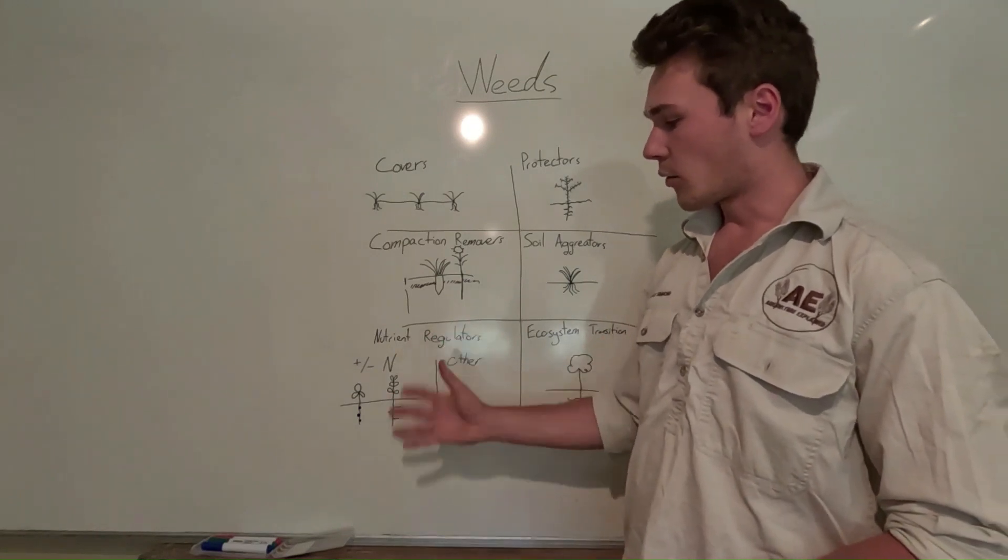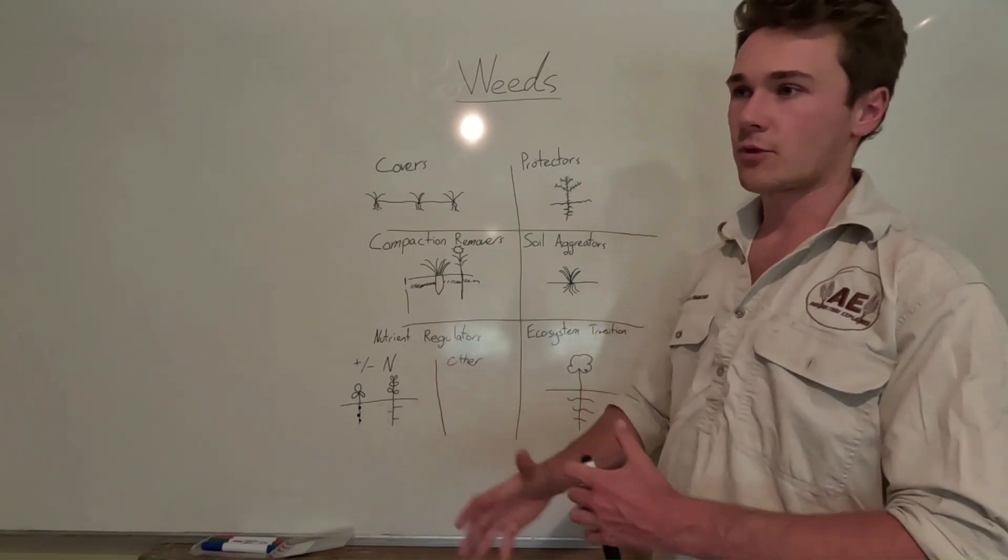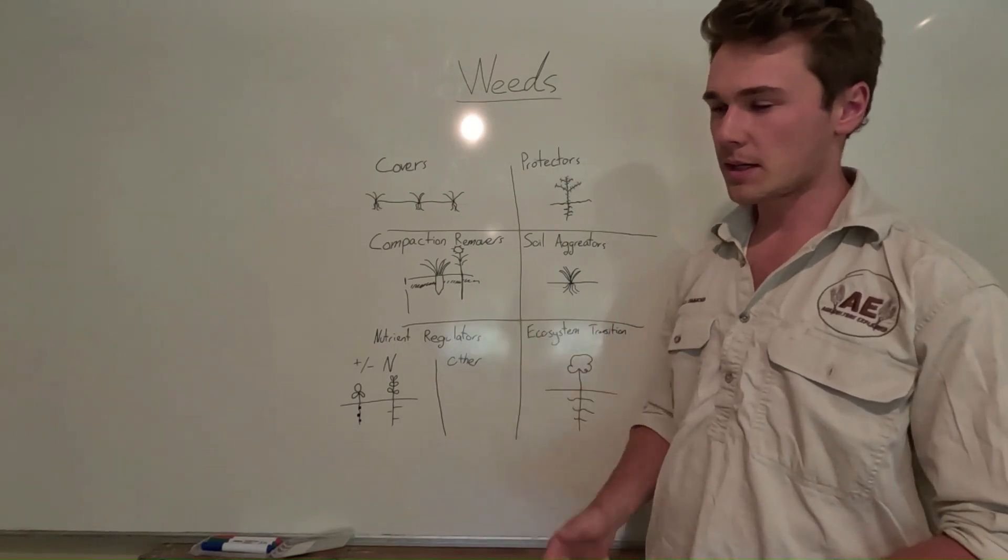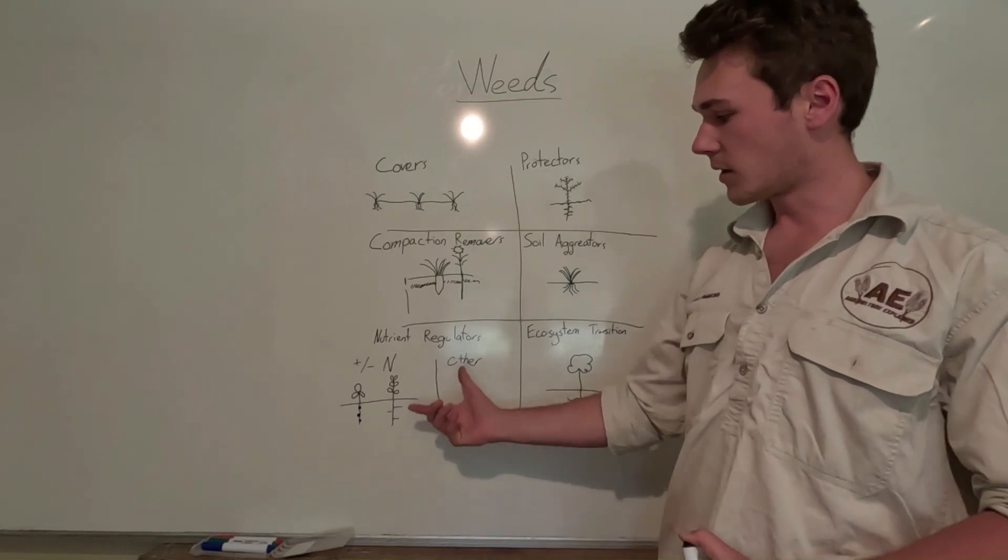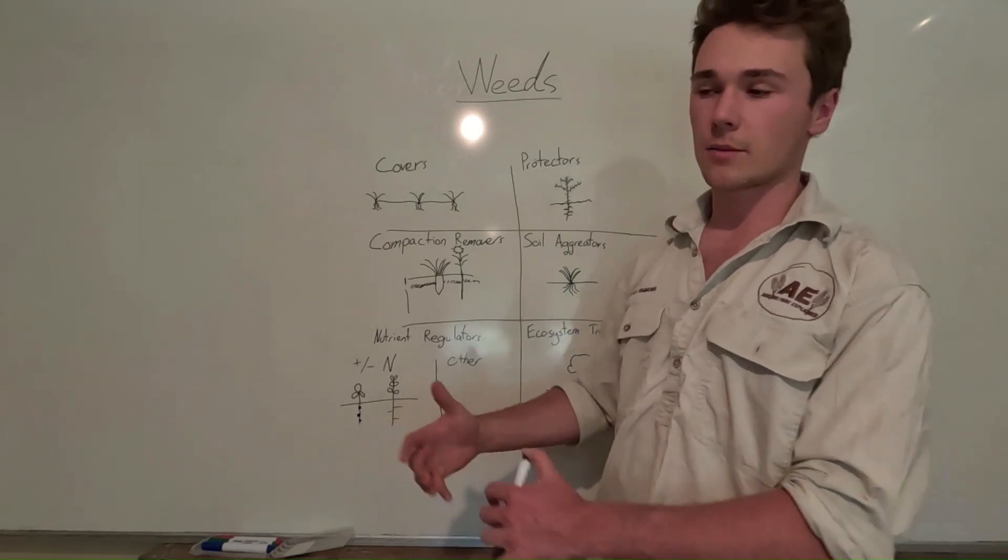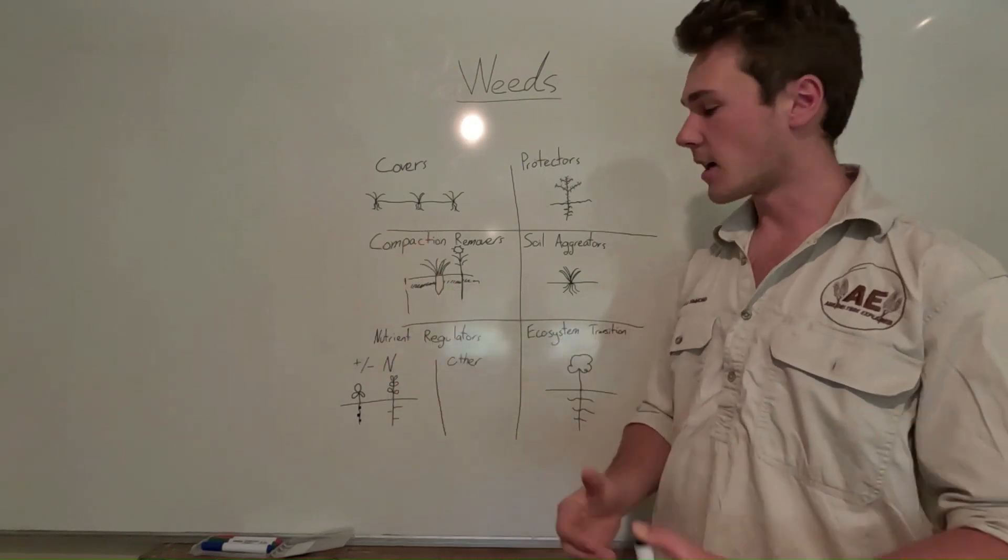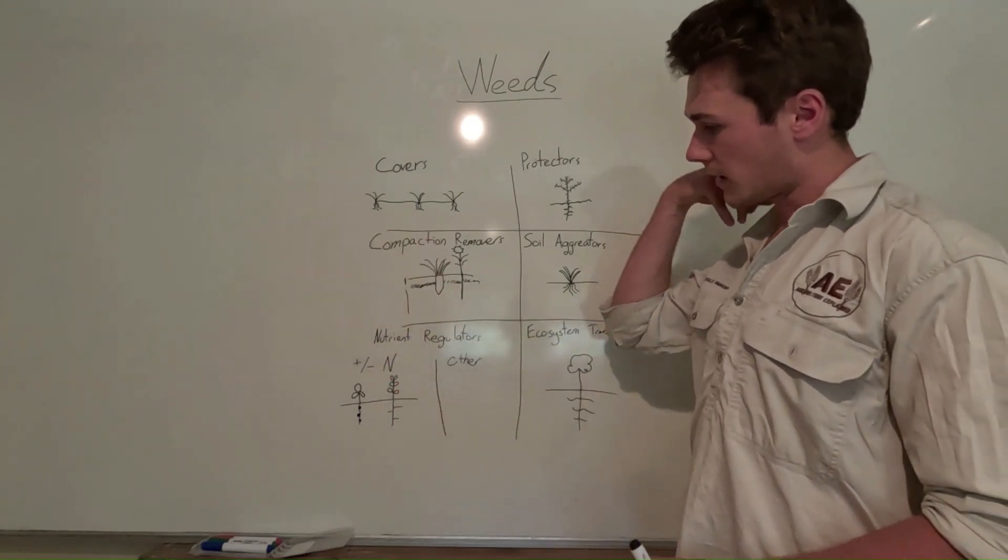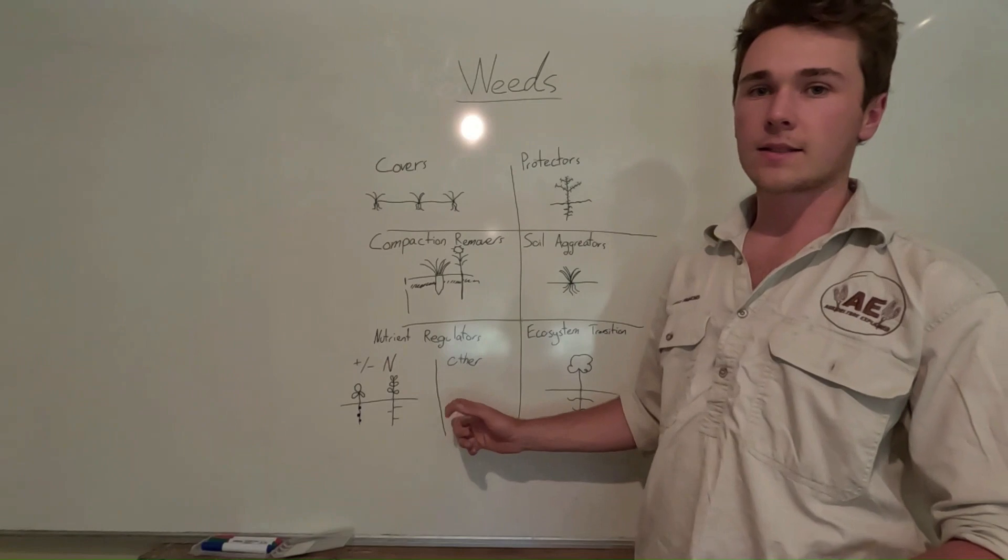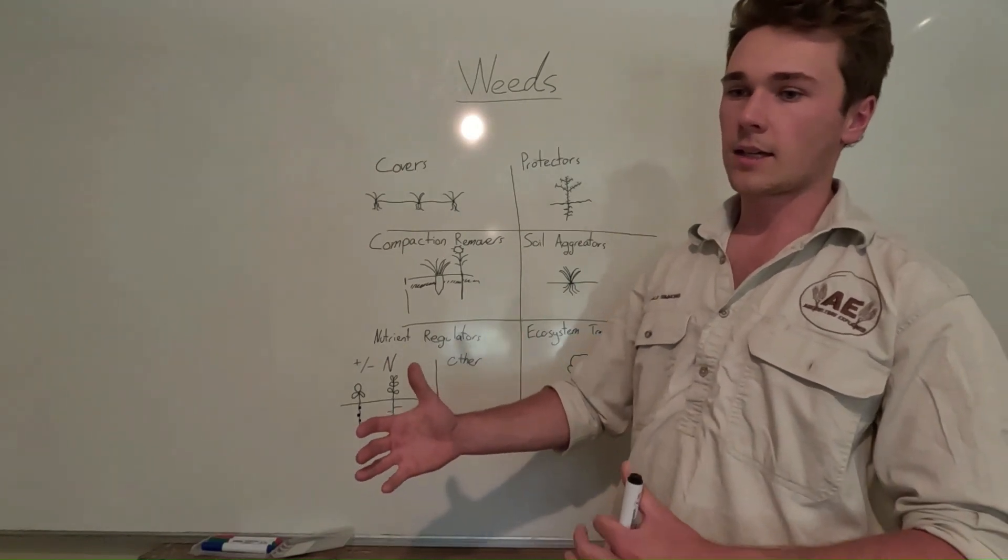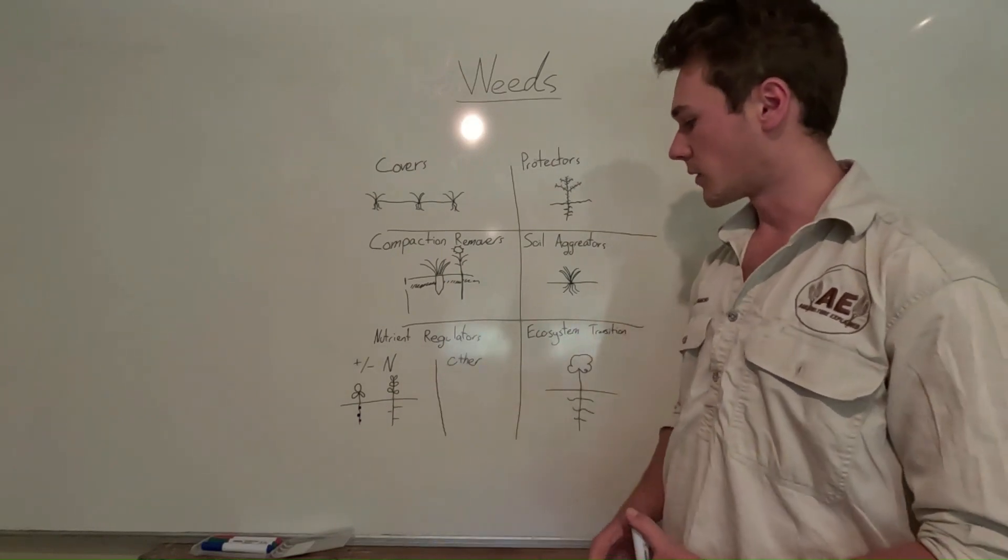There's also a group of plants that regulate an excess of nitrogen. So this is like lamb's quarter, I think pigweed. I'm sure there's a bunch of others. But essentially, they are only able to outcompete everything else because there's so much more nitrogen that they're able to take up and utilize. Now there's a whole range of different plants that are able to outcompete everything else because there's either a deficiency or an excess of those nutrients.